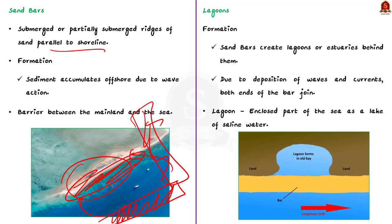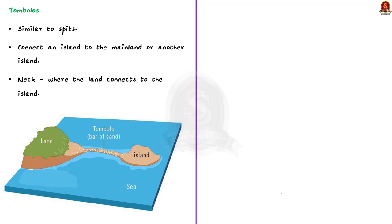The fourth depositional landform is lagoons. Sometimes sandbars create shallow lagoons or estuaries behind them. Due to deposition by waves and currents, both ends of a bar can join to enclose a part of sea between the coast and the bar. This enclosed part forms a lake of saline water called a lagoon, generally connected to the sea through a narrow passage. Chilka Lake and Pulikat Lake in India are examples of lagoon lakes. The fifth one is the tombolo — similar to spits, but tombolos connect an island to the mainland or another island. They form when sediment accumulates and joins two land masses.